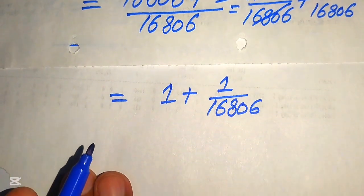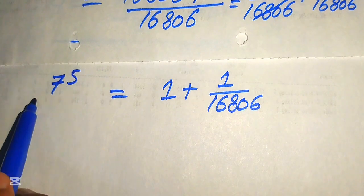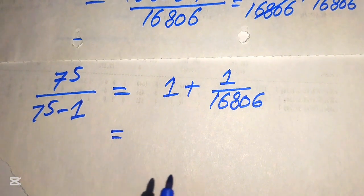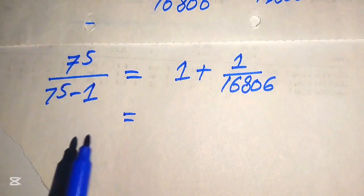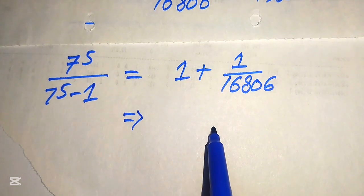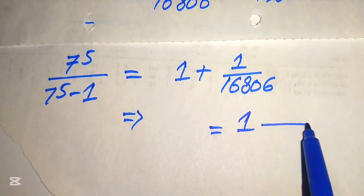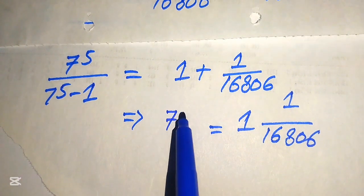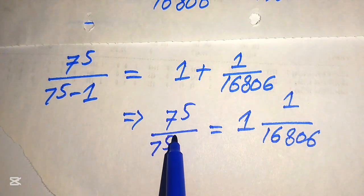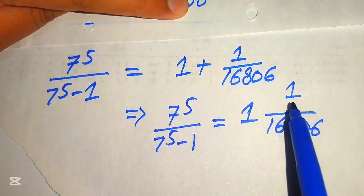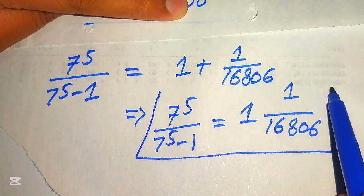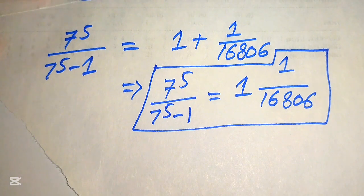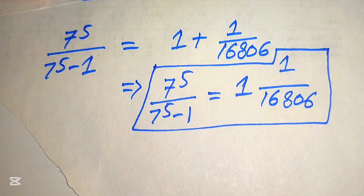So we have 7 to the power of 5 divided by 7 to the power of 5 minus 1 written in mixed fraction form as 1 whole 1 over 16806. Finally, 7 to the power of 5 divided by 7 to the power of 5 minus 1 equals 1 and 1/16806. This is the final simplified form and the final answer. Thank you so much for watching this video — please subscribe to my channel for more exciting videos.